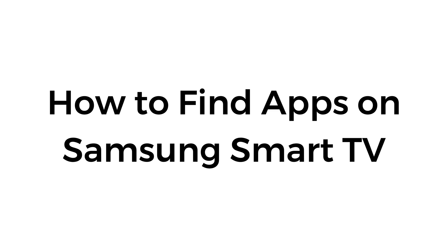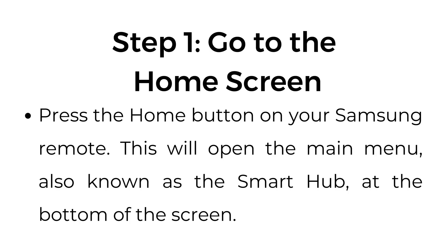How to find apps on Samsung Smart TV. Step number one, go to the home screen. Press the home button on your Samsung remote. This will open the main menu, also known as the Smart Hub, at the bottom of the screen.